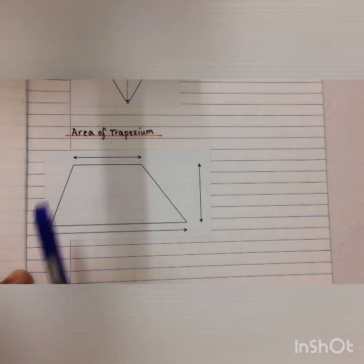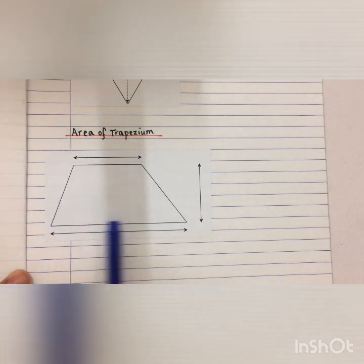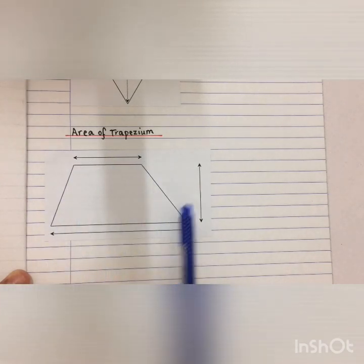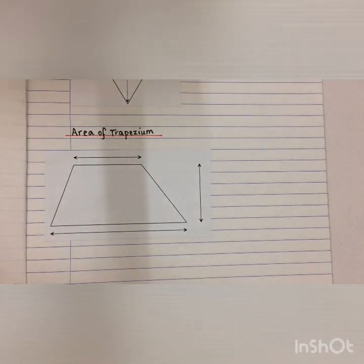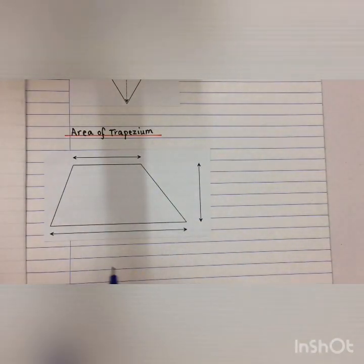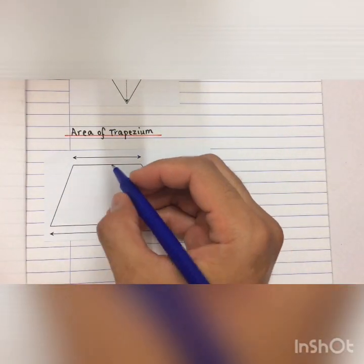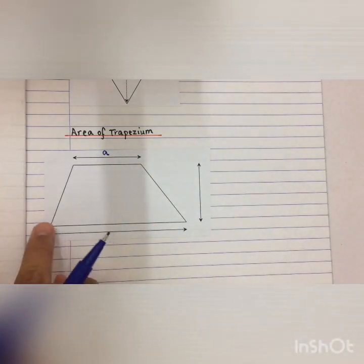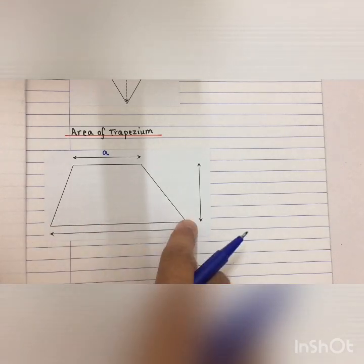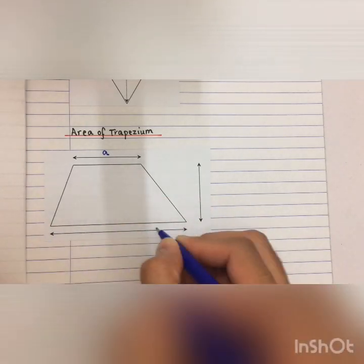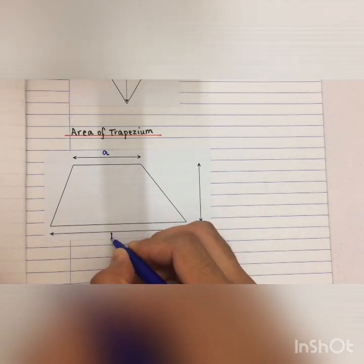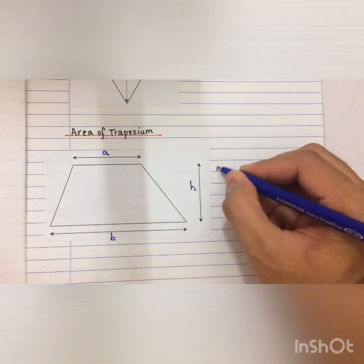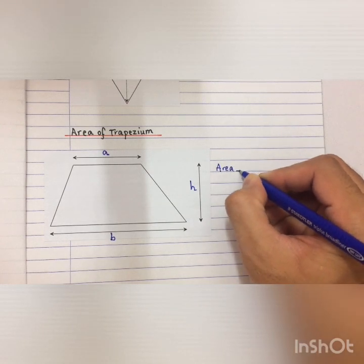Lastly, is to find the area of a trapezium. This is the shape of your trapezium where you have 2 parallel sides and this is the height. I am going to label my 2 parallel sides: from here to here I label A, so this is the length A. From this point to this point I label the length B. And then this is the height represented by H.